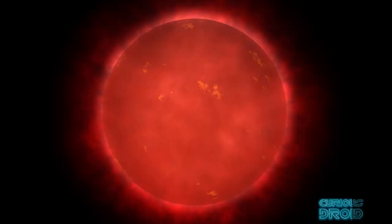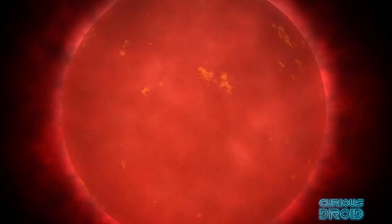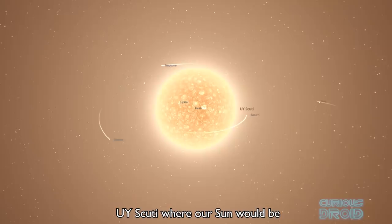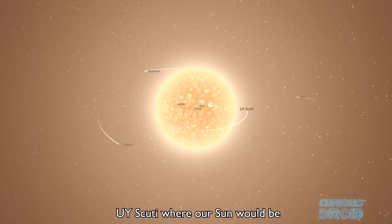Of the 60 closest stars to our sun, 50 are red dwarfs. Because they are so small and slow burners of their hydrogen fuel, their lifespans will be measured in the trillions of years. At the other end of the scale are the red hypergiants like UY Scuti, currently the largest known star which is 1700 times our sun with a diameter of 2.3 billion kilometers but it is only 30 times the mass of our sun.